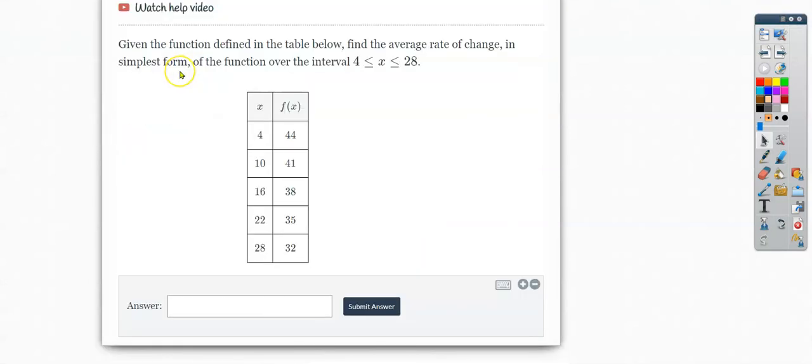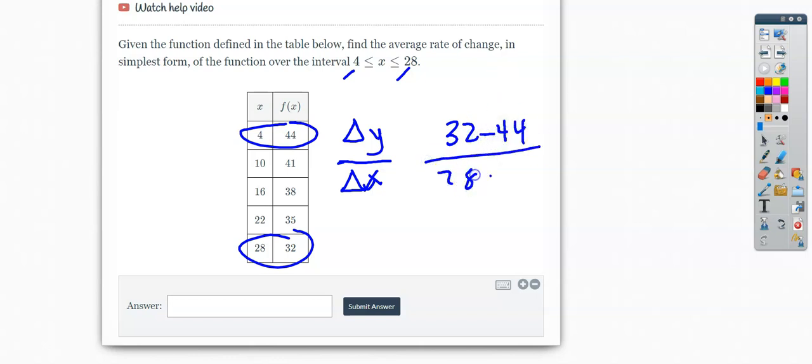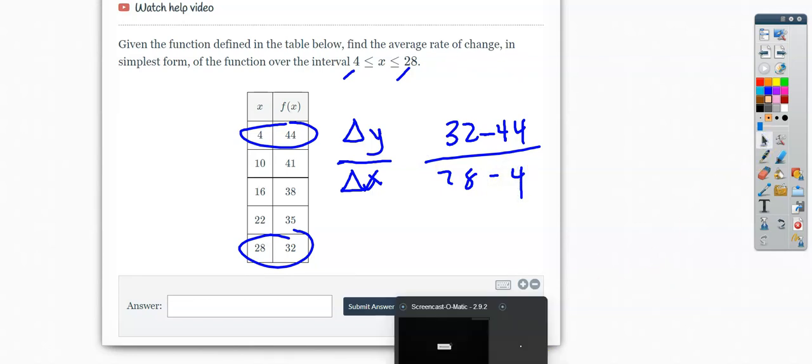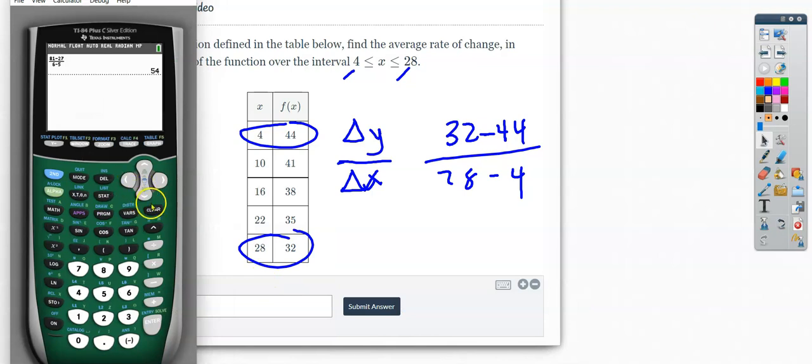We'll do this one more time. Find your x values that they're looking for, and that is 4 and 28. So these are your two points that you'll put into your fraction. 32 minus 44 all over 28 minus 4. I'm going to choose to put this in my calculator all at once. Alpha y equals.